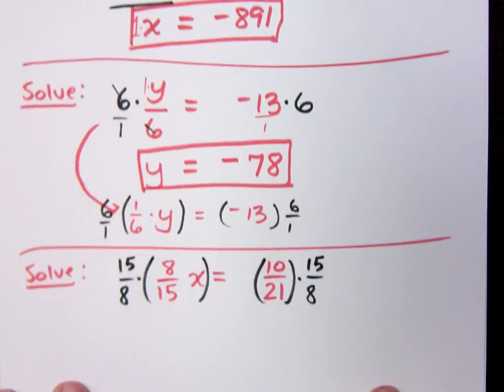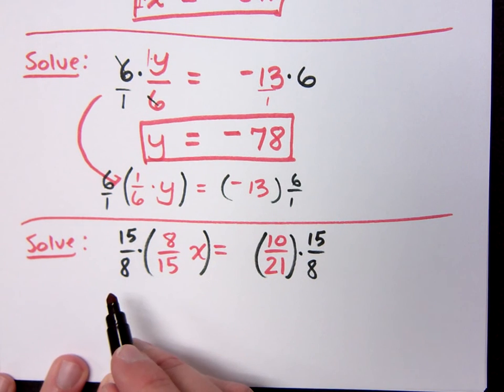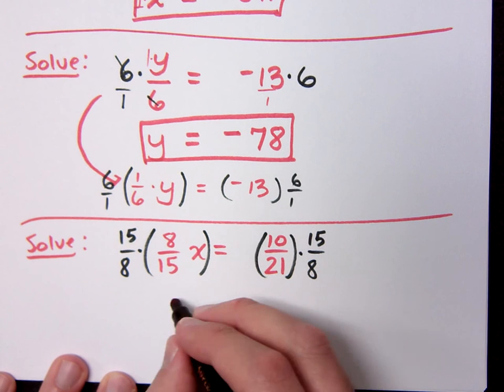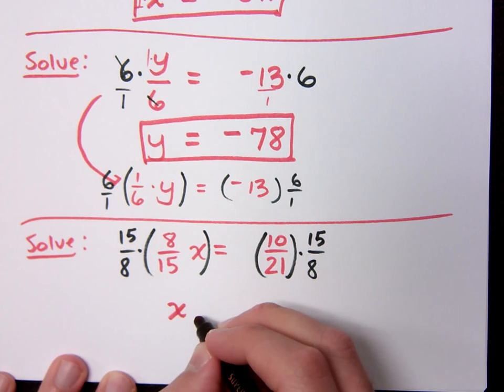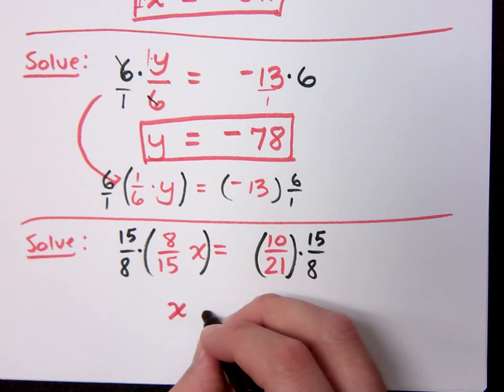So on the left side, what's going to happen when you multiply a fraction times its reciprocal? Right. You get 1. So I'm going to have just x. I don't write the 1. It's understood to be there. And I'm looking for just a plain positive 1x. Equals. So what happens on the right side?